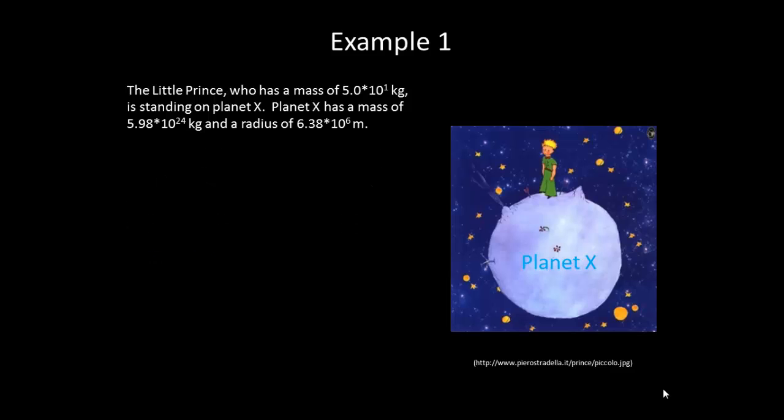Now, let's take little prince and take him and stick him on the planet Earth. What should his weight be? Well, we know that the force of weight is equal to m times little g. So, 50 kilograms times 9.8 meters per second squared gives us 490 newtons.